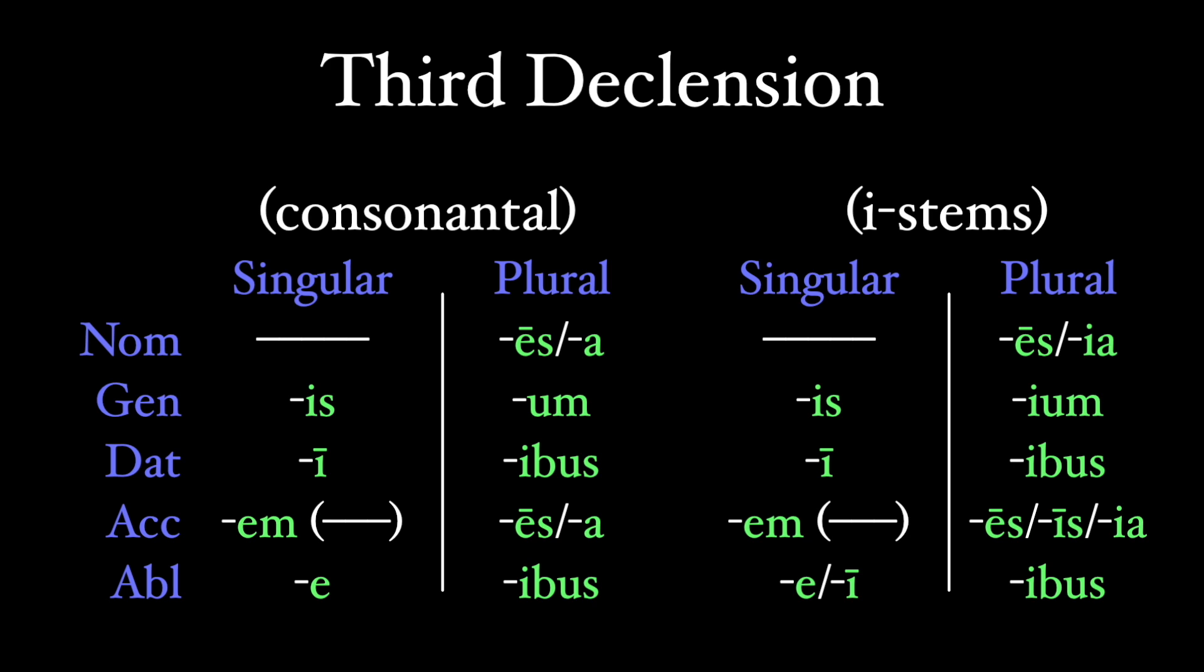And you can get by reading Latin if you don't really differentiate between these two. From my own experience, it seems like many of the most common third declension words, like dux or tempus, are consonantal stems. So, here's how to determine if a third declension noun is an I-stem. There are two groups, and I'll deal with each separately.